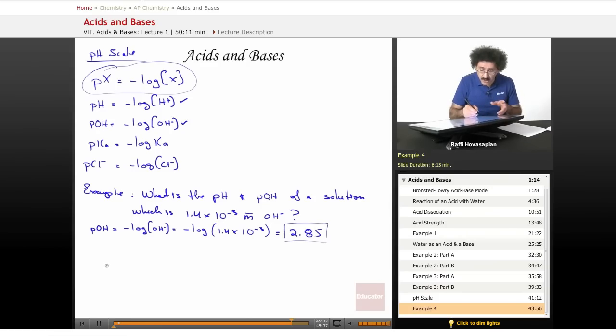Now, we want the pH. Well, we know that the H concentration times the OH minus concentration is equal to 1.0 times 10 to the negative 14. So the H plus concentration equals 1.0 times 10 to the negative 14, let's just do two significant figures here.